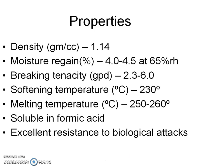Some of the important properties of nylon include: density of 1.14 grams per cc; moisture regain in the range of 4 to 4.5 percent at 65 percent relative humidity under standard lab conditions; and melting temperature of 250 to 260 degrees C. Nylon is soluble in formic acid, which is used as one of the identification methods for nylon. It also has excellent resistance to biological attacks.